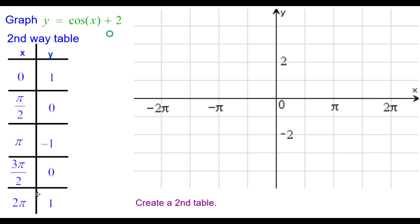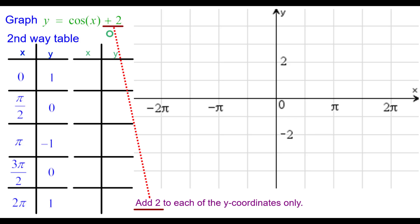And these are the values. You should just know those. We need to create a second table. And our parameter again is add two to each of the y coordinates only, meaning nothing is being done to the x coordinates. So we'll go ahead and keep the x coordinates the same. But we're going to add two to each of the y coordinates.